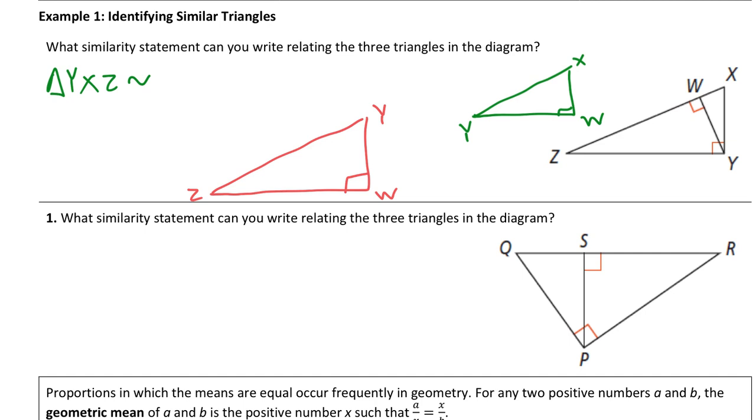So when I write my similarity statement, I'm going to say triangle, and I'm just going to start with the right angle. I'm going to go from Y to X to Z for the original triangle. If I do that, this one smaller triangle I would name WXY. And that's going to be similar to triangle, the red one, WYZ. The original triangle, the largest of the three, is YXZ.